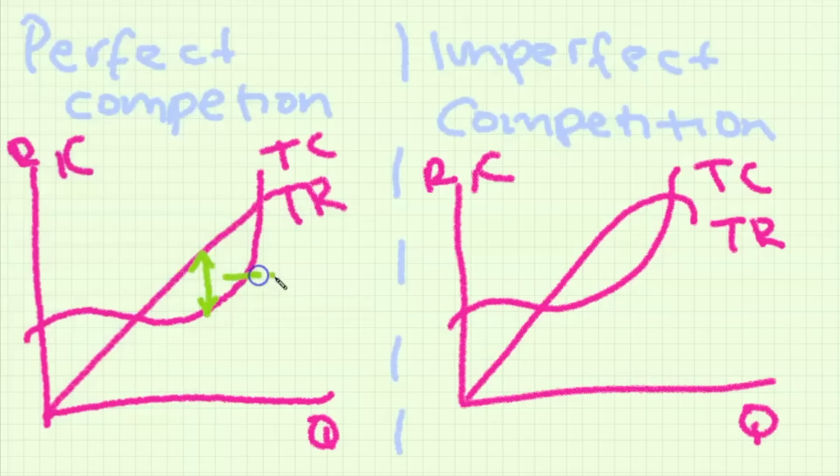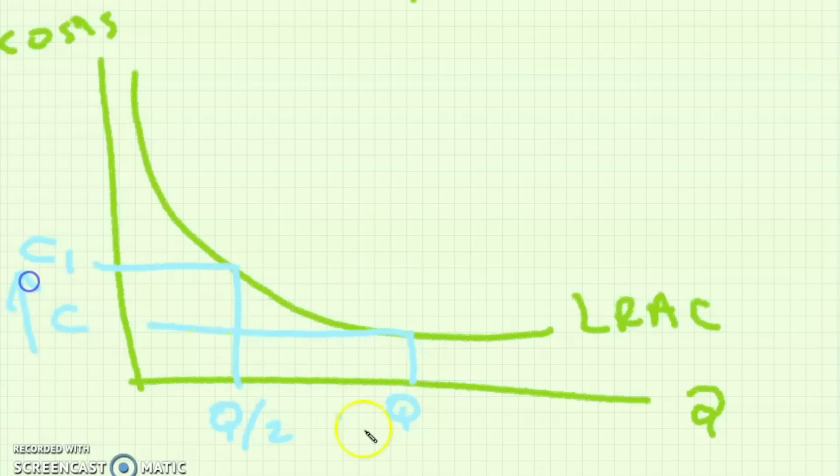Here you can also tell whether the firm is making abnormal, normal or a loss. If total cost is below total revenue then it is an abnormal profit but where TC and TR intersect that is normal profit. If you want to show economies of scale or the long run average cost curve then you can just use this curve.